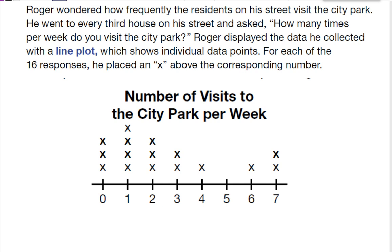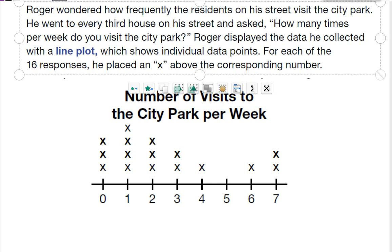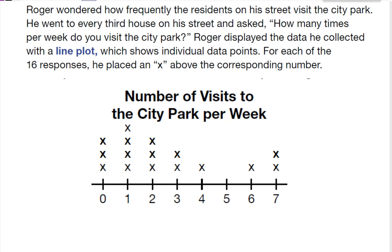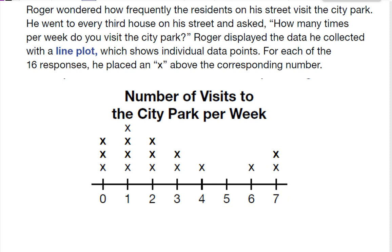On this one, Roger wondered how frequently the residents on his street visit the city park. So he went to every third house on the street and asked, how many times do you go to the park? He displayed the data he collected on a line plot. And this is how a line plot is created — for each response, he put an X above the number of times they went to the park. So this would be like seven times — two people go seven times a week to the park.